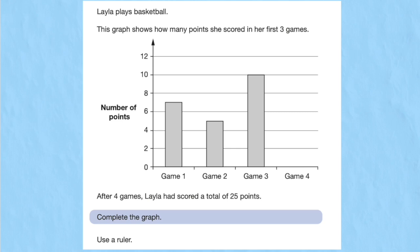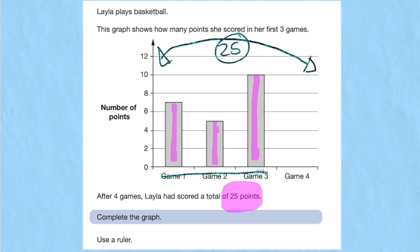Question three. Lila plays basketball. This graph shows how many points she scores in her first three games. We can see game one, game two, and game three. After four games, Lila has scored a total of 25 points. Complete the graph. Use a ruler. So it's saying that after all four games, we have a total of 25 points. So we essentially have a missing number question. We have the value of these three games, but we don't know the value of the fourth game yet. So let's add up game one, two, and three.